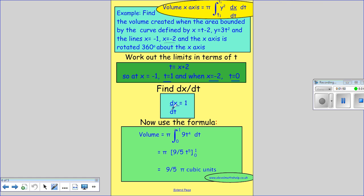We then need dx/dt, so we differentiate that with respect to t which gives us 1. Then we shove everything in here, so we get π times the integral between 0 and 1 of y². Y is 3t², so that would be 9t⁴, times dx/dt which is 1 so I've just left it out, and then dt.